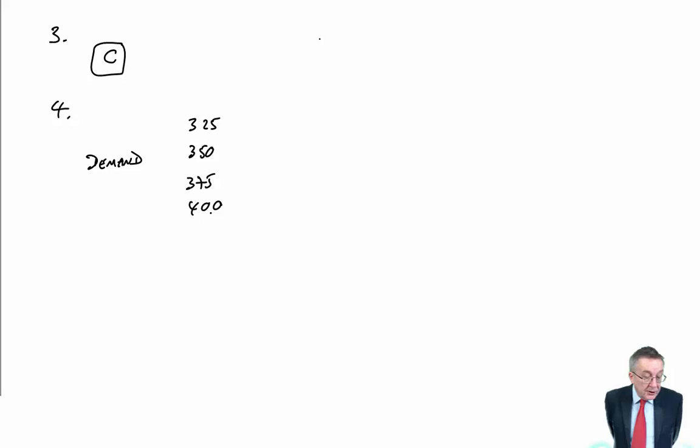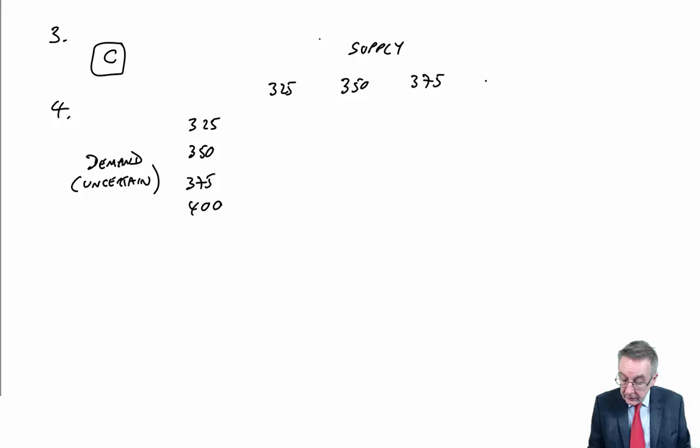I'm not going to write up the whole table, but just so it's clear. The demand, which is uncertain: 325, 350, 375, 400. As the day progresses, the price is reduced. At the end of the day, any sandwiches not sold are thrown away. We've prepared a regret table, so the regret table's been done for us. We normally do the profit table first, then prepare the regret table, but they've done that for us. It shows the amount of profit which would be foregone at each supply level given the various demand levels. The question is, how many should we supply? Are we going to supply 325, 350, 375, or 400?